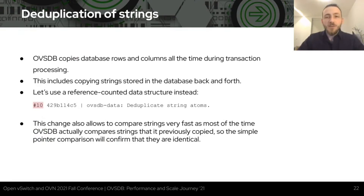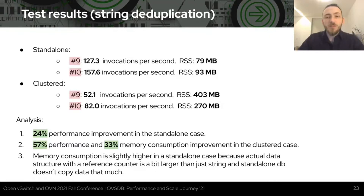The next big effort is deduplication of strings in OVSDB objects. Databases usually have a significant amount of strings stored, and copying and storing all this data is a significant performance issue. Patch number 10 introduces a reference-counted structure for storing strings, removing the need to copy big chunks of memory and allowing very fast string comparison, since most of the time we compare strings to their copies. The results are impressive: 24% performance improvement in standalone and 57% in clustered case, going from 52 to 82 invocations per second, plus a 33% memory consumption improvement.